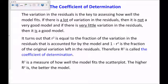Next, the coefficient of determination. The variation in the residuals is the key to assessing how well the model fits the data. If there's a lot of variation in the residuals, it is not a very good model; if there's very little variation, it is a good model. It turns out that r² equals the fraction of the variation in the residuals that is accounted for by the model, and 1 − r² is the fraction of the original variation left in the residuals. r² — the correlation coefficient squared — is called the coefficient of determination, and it's a measure of how well the model fits the scatterplot. The higher r² is, the better the model.